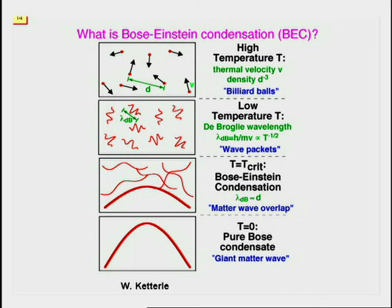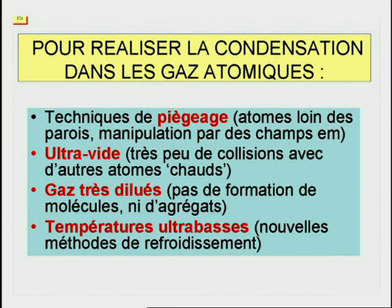À T égale zéro, toutes les ondes se dissolvent dans cette onde géante de matière. Pour réaliser la condensation de Bose-Einstein dans le gaz dilué, il faut travailler dans des conditions extrêmes qui sont devenues accessibles grâce aux avancées récentes de la physique atomique. Il s'agit des techniques de piégeage qui permettent de garder les atomes loin des parois et de les manipuler par des champs électromagnétiques.